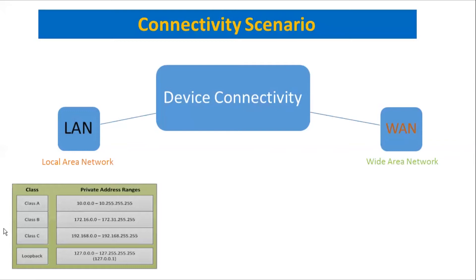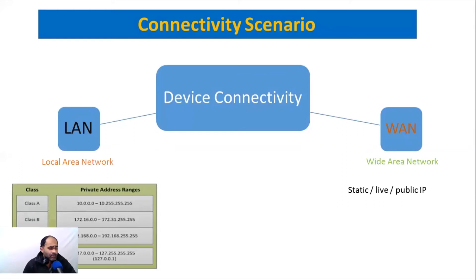As far as WAN — wide area network — is concerned, we need to get a static IP, live IP, or public IP. The ISP you are using provides internet access, and you have to buy this IP from your ISP. Static, live, and public IP are all in the same category and are obtained from your ISP.